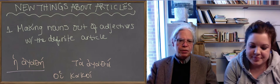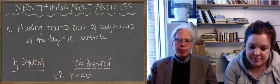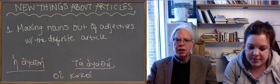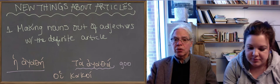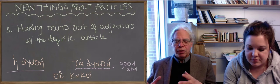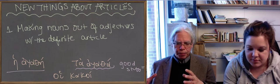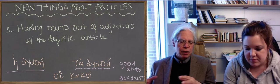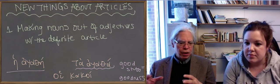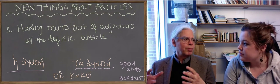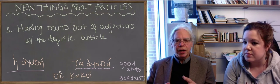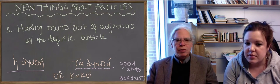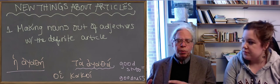If you make it neuter and plural, it's ta agatha. That means the collection of good things. In Greek, actually, that usually means goodness. It's a way of talking about an abstraction, which is goodness, in a concrete way. So all the things that are good, in a sense, give you the concept of what the essence of goodness is. So you can do it in the singular or the plural.